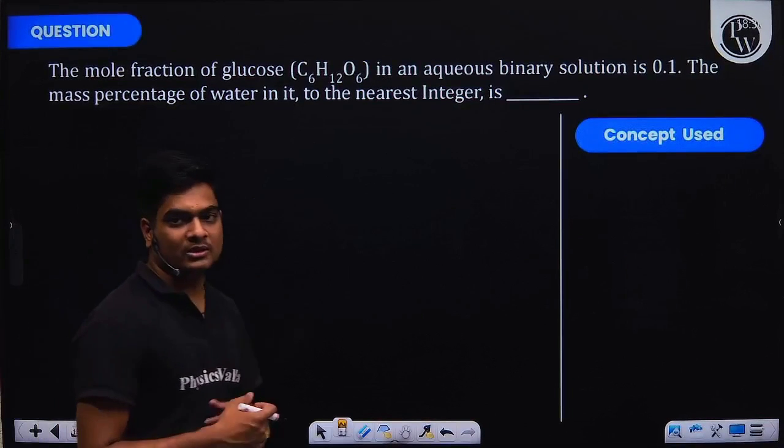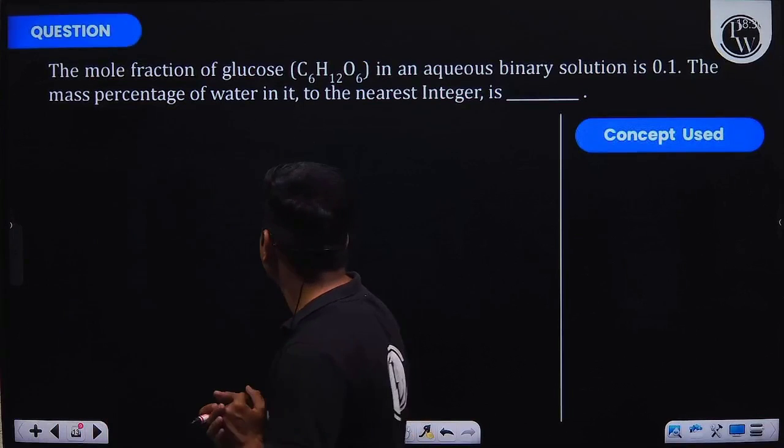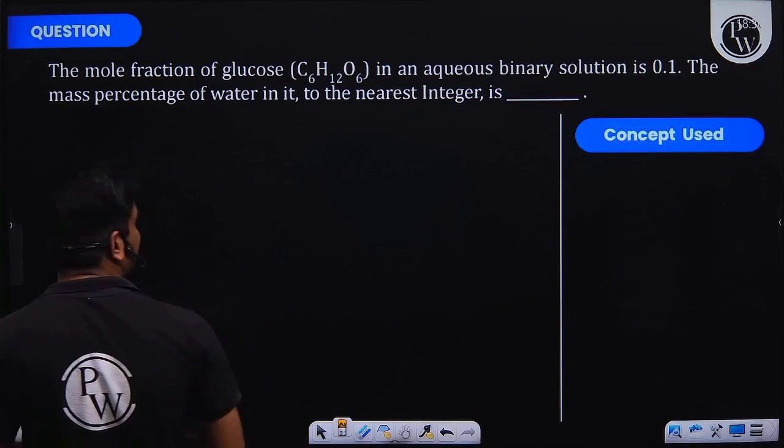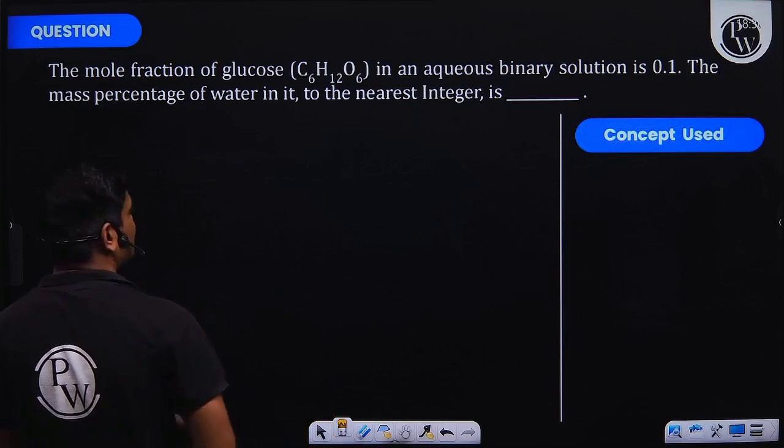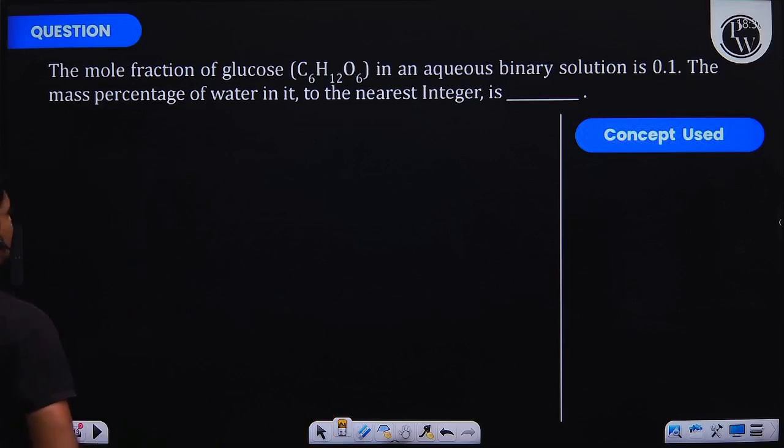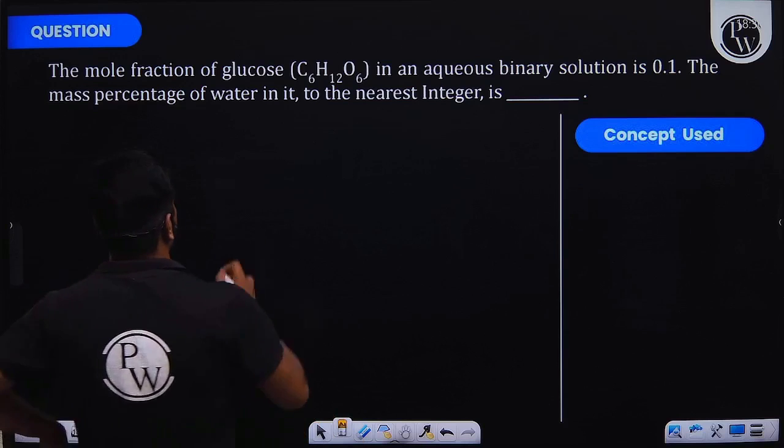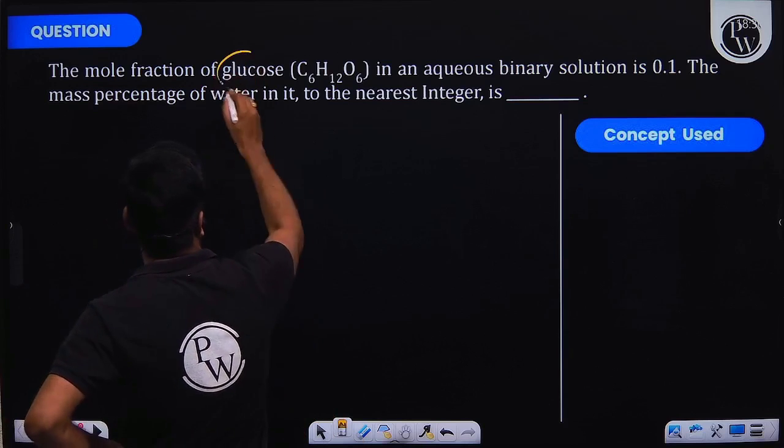Let's see the question. The question says the mole fraction of glucose in aqueous binary solution is 0.1. The mass percentage of water in it to the nearest integer is what we need to find.